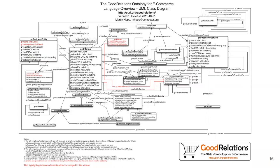Looking at the GoodRelations vocabulary overview again, we've now covered most of it: offering, business entity, price specification, product or service, individual, some items, quantitative value, qualitative value, days of the week, opening hour specification, and location. If you're ever in a situation where you need to model data for an e-shop, this is one of the ways to go.